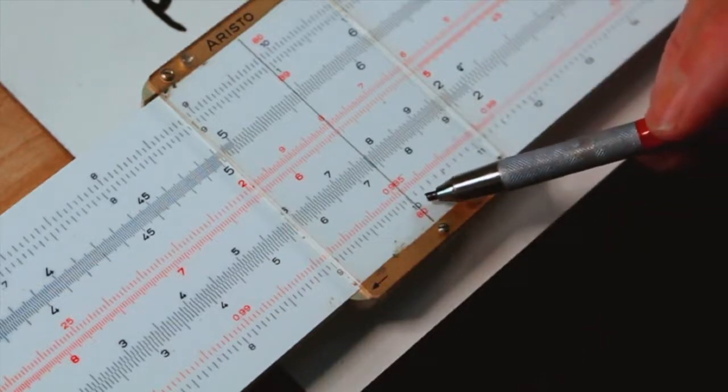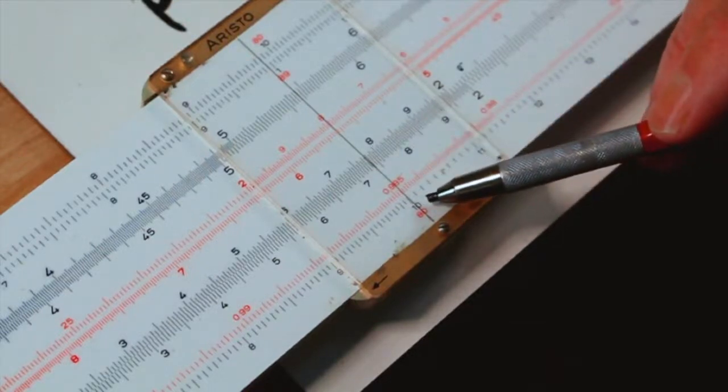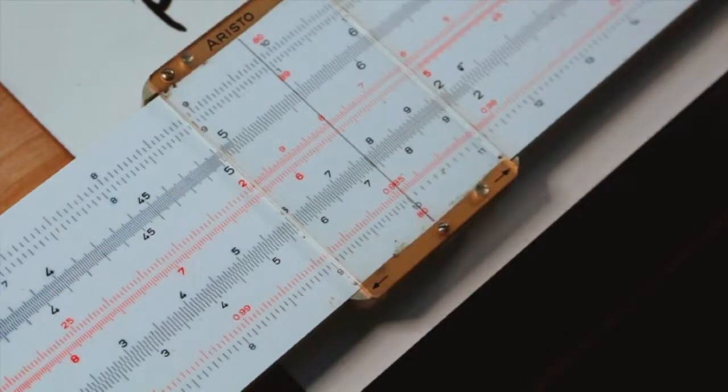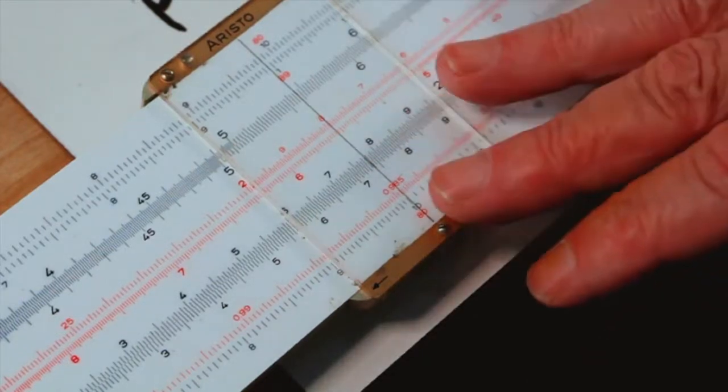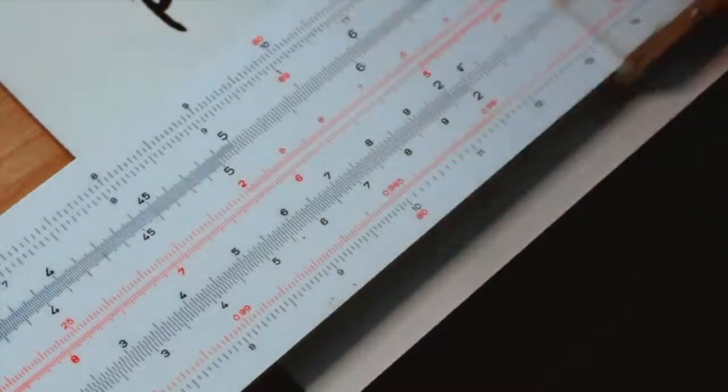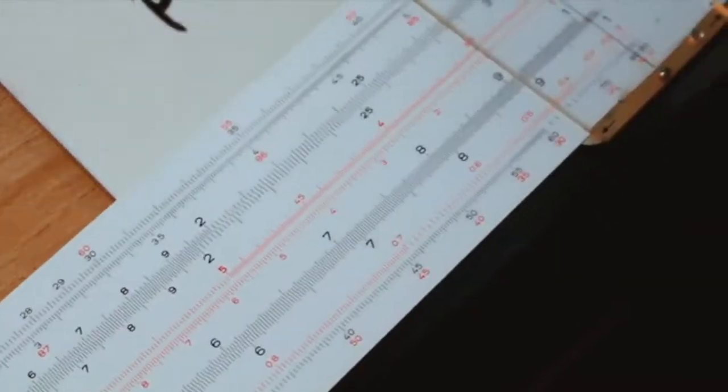Likewise, if you want to look at the sine of 10 degrees, you simply read up onto the d-scale. If you want to see the cosine of 10 degrees, you read that directly off of this red p-scale here. That's the advantage of the p-scale. You don't have to move the slide. Normally, you would have to bring this over. You'd read the sine here at 10, and then you'd have to read the cosine all the way on the other side of the slide rule down there.